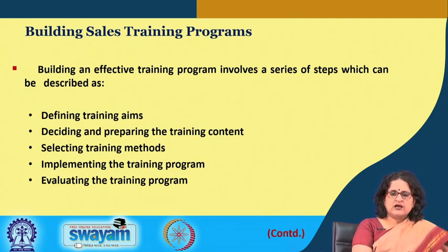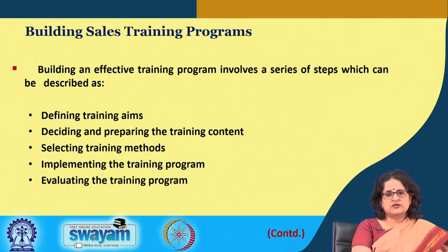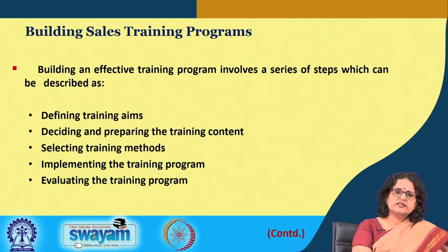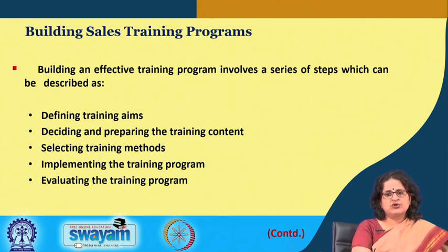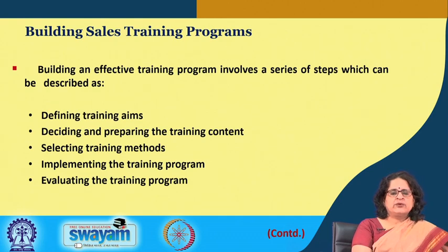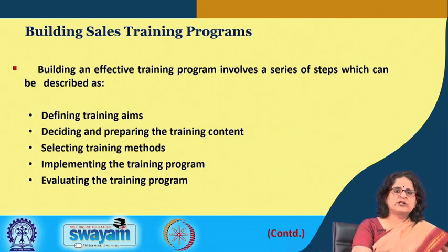Building an effective sales training program involves five steps. The first is defining the training aims — why training should take place — which differs between initial and continual sales training programs. The second step is preparing the training content, which depends upon the training needs. Content for fresh sales trainees differs from that designed for existing employees, covering either new knowledge and skills or updating existing ones.